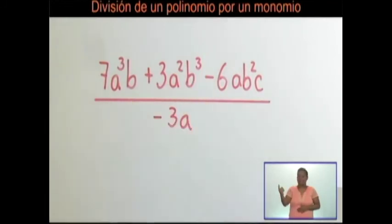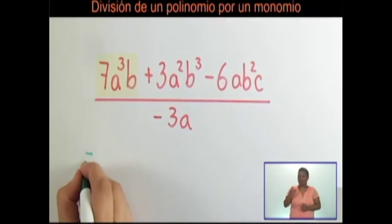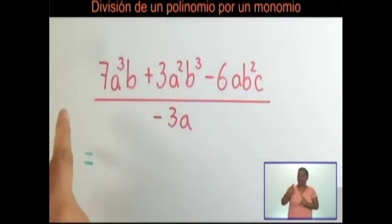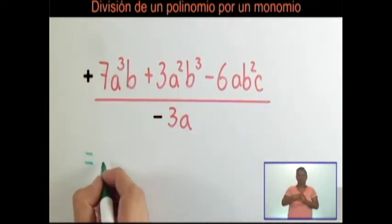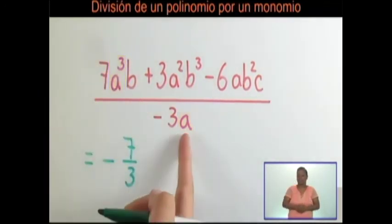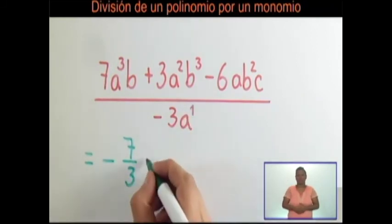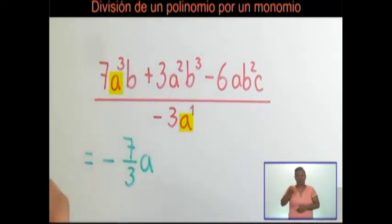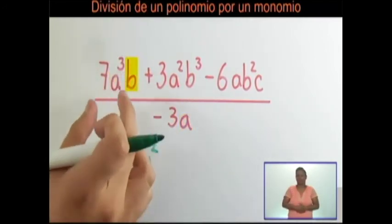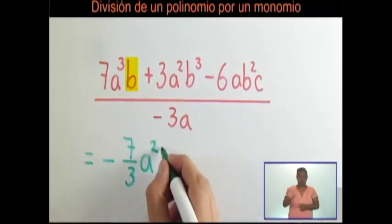El tema de este video es división de un polinomio por un monomio. Vamos a realizar el siguiente ejercicio: cada uno de los términos del numerador lo vamos a dividir por el monomio, que es menos 3a. Tomamos 7a al cubo b entre menos 3a. Primero aplicamos ley de signos: positivo con menos es menos. Luego 7 entre 3 como da decimal lo escribimos como fracción: 7 entre 3. Dividimos las variables: a al cubo entre a (exponente 1) restamos exponentes: 3 menos 1 = 2, queda a al cuadrado. La b solo está en el numerador, queda igual: b.